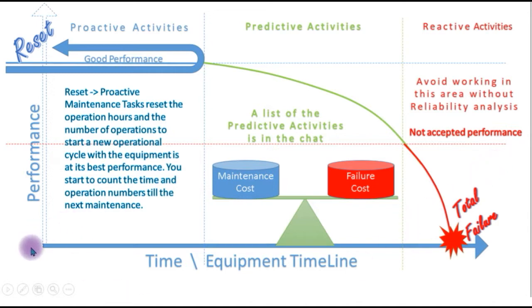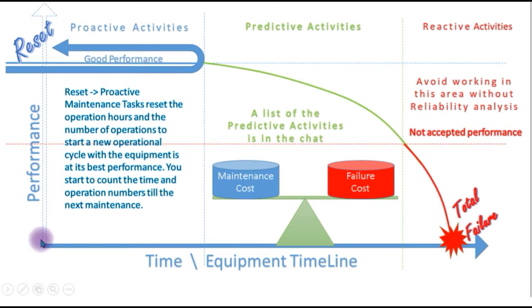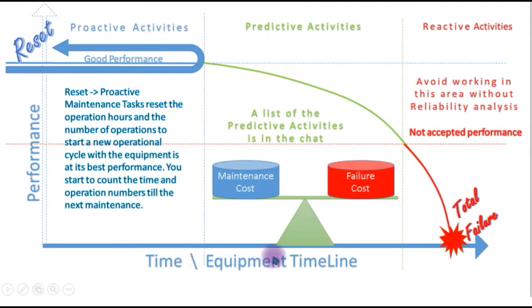If we have a simple curve like this one, this axis represents the performance of the machine or the status of your machines. It starts from zero, which is total failure, and here is the best performance — 100% performance of the machine. And on this line, that is the timeline of the equipment, the time axis.